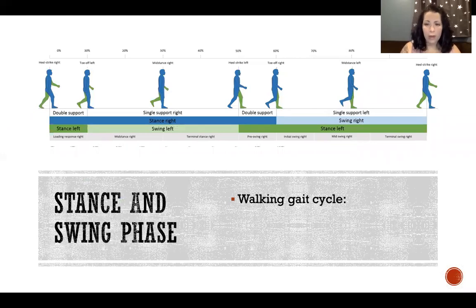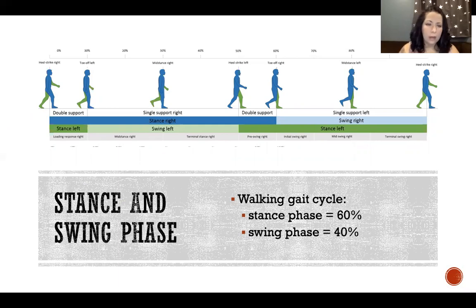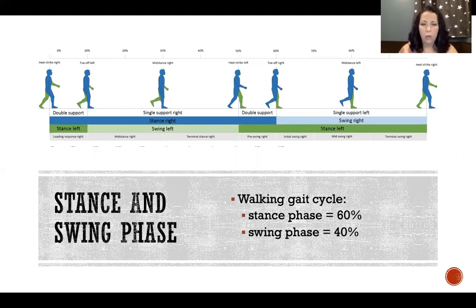During a walking gait cycle, about 60% is stance phase and about 40% is swing phase. Both feet are in stance at the same time, so we have double support twice during the gait cycle. At the very beginning of the cycle and in the middle where we're switching between feet, we have double support. In between we have single support — one leg on the ground and one swinging. Because stance overlaps between left and right in two places, we have a greater amount of stance than swing in the total gait cycle.